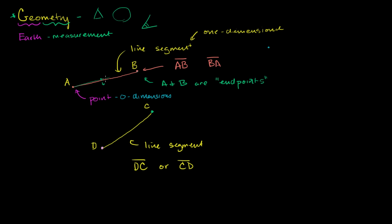A line segment can actually have a length. If I write AB with a line on top, I'm referring to the actual line segment. But if I write AB without the line — for example, AB equals 5 units — that means the distance between A and B is 5, i.e., the length of line segment AB is 5.